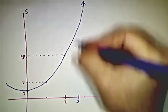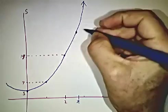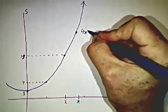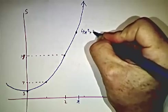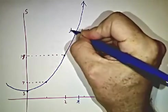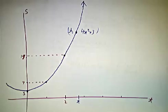So at time t, our position is 4t squared plus 3. I guess it's t comma that. Okay, but its height is 4t squared plus 3.